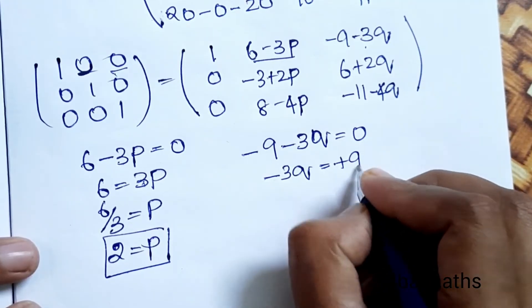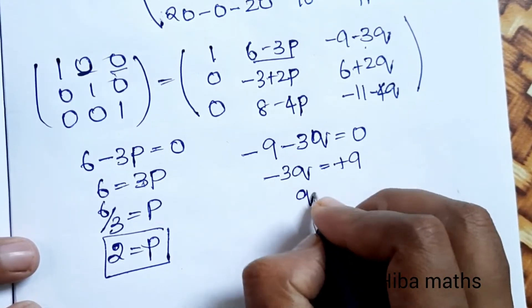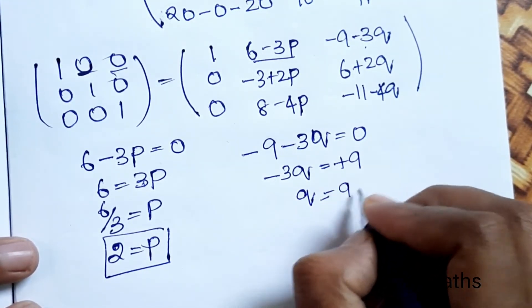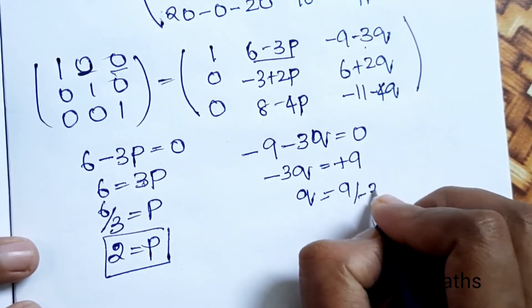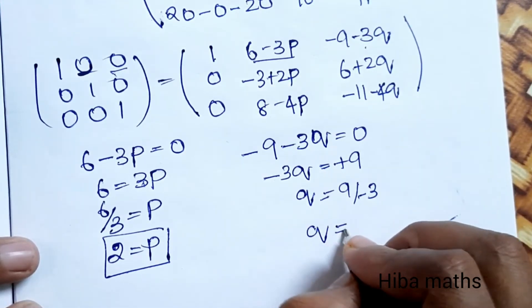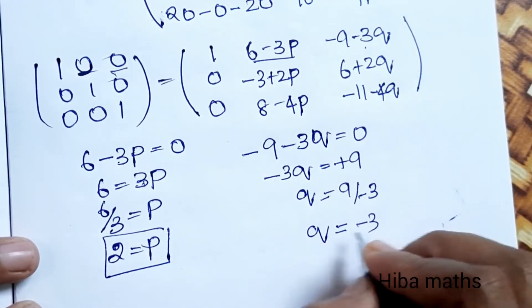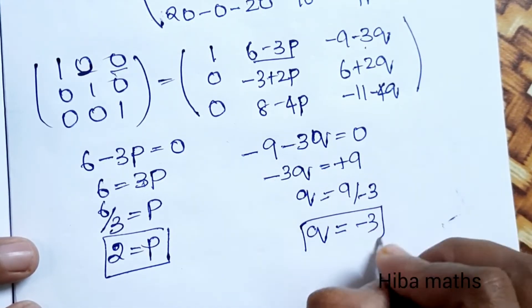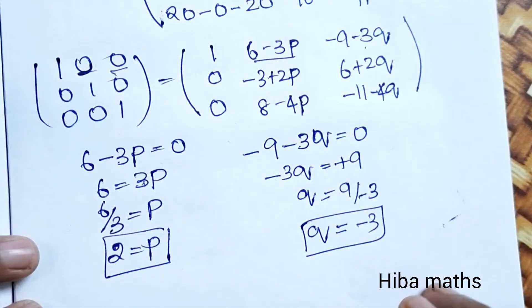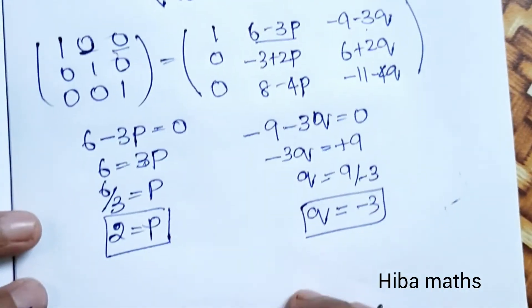Now for Q: minus 9 minus 3Q is equal to 0. So minus 3Q equals 9, therefore Q equals 9 divided by minus 3, therefore Q is equal to minus 3. That is the solution — very easy.